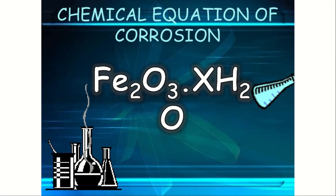Chemical equation for corrosion: Fe₂O₃·xH₂O — where x can be any water of crystallization, for example 2H₂O, 10H₂O, etc. So the chemical equation is Fe₂O₃·xH₂O, where x can be any natural number.